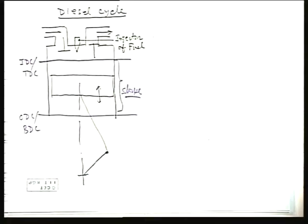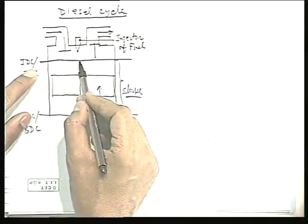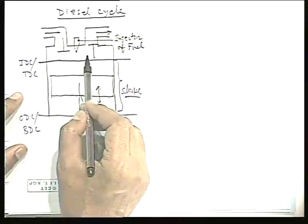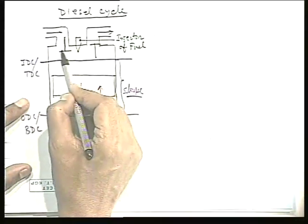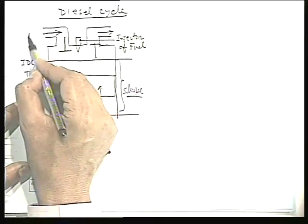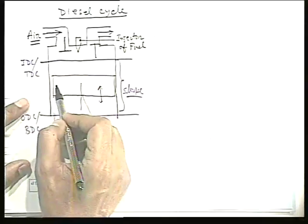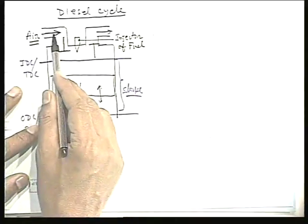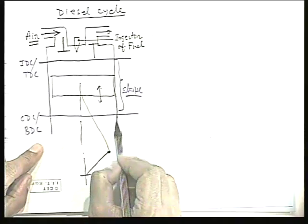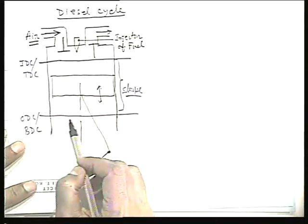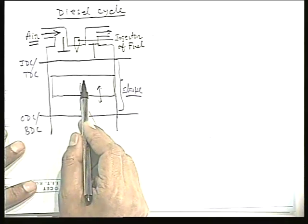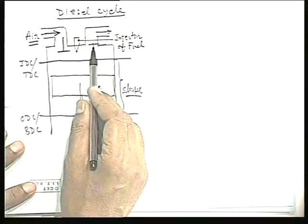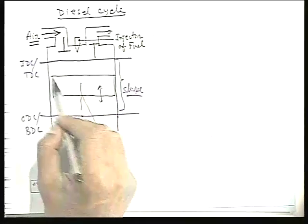The piston reciprocates between two dead center positions: the inner dead center (top dead center) and the outer dead center (bottom dead center). During the inlet stroke, as the piston descends, suction draws in simple fresh air from the atmosphere — not an air-fuel vapor mixture as in a petrol engine. When the piston reaches the bottom dead center, the cylinder is full of air. Both valves are then closed and the air is compressed as the piston ascends.